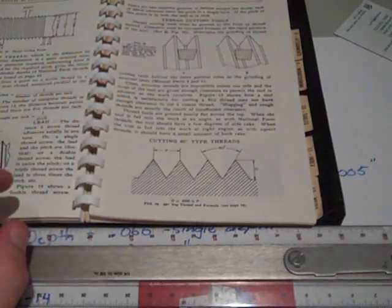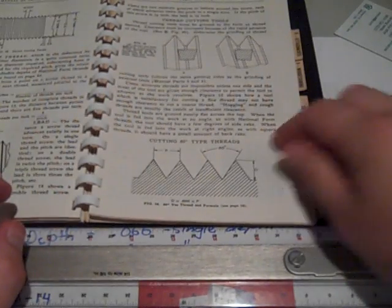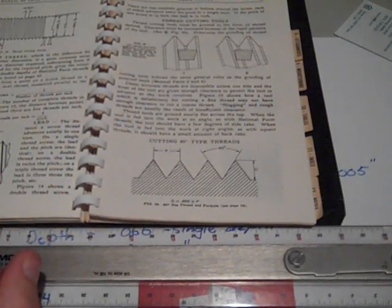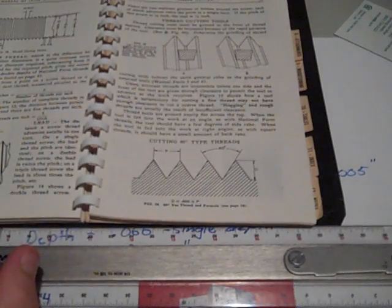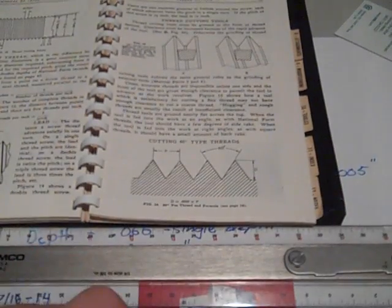So I figured I'd show you an easy calculation that's just a ballpark figure that'll get you in the region every time. Some people will start cutting a thread until they see a V form, and then they'll start checking it with a nut or something like that.